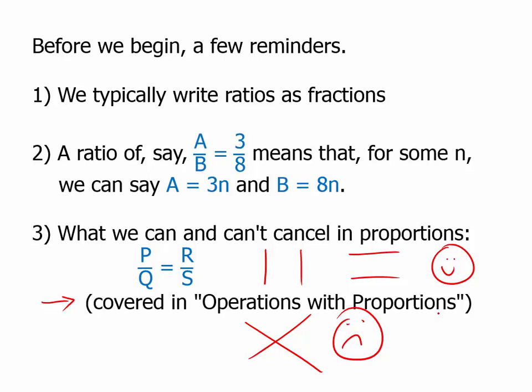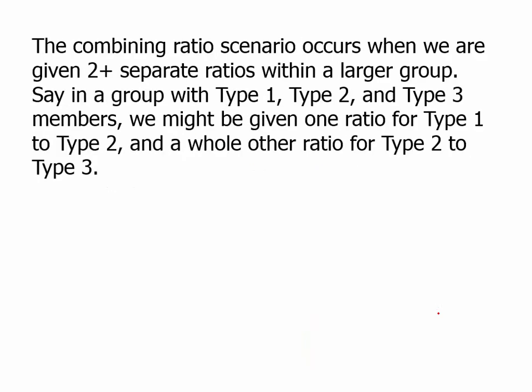Okay, let's start talking about these ratios. So, the combining ratio scenario, what we're talking about in this lesson, occurs when we're given two or more separate ratios within a larger group. Say, in a group with type one, type two, and type three, we might be given one ratio for type one to type two, and a whole other ratio for type two to type three. So, if we want to understand what's going on in the whole group, we'd somehow have to combine those ratios.